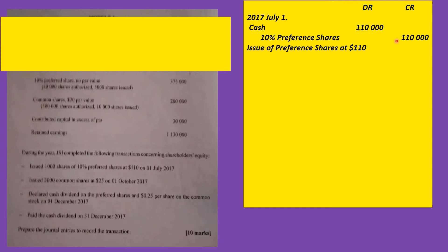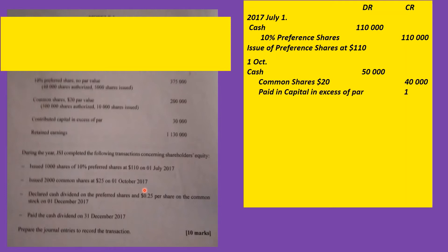The next item: issued 2,000 common shares at $25 on October 1, 2017. That is a straightforward multiplication — 2,000 × $25 = $50,000 in cash. The common shares have a $20 par value, so 2,000 × $20 = $40,000 goes to the share capital account. The remainder of $10,000 goes to contributed capital in excess of par. Narrative: issued 2,000 shares at $25.